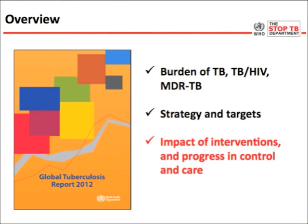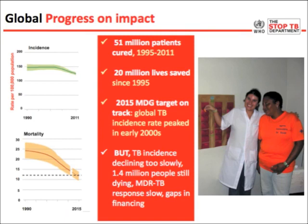Regarding the impact of the intervention: 51 million patients have been cured between 1995 and 2011. We estimate 20 million lives were saved since 1995 when WHO introduced the DOTS strategy. The 2015 Millennium Development Goal target is on track. However, being on track doesn't mean it was an ambitious target — the incidence is coming down but too slowly, and 1.4 million people still die of a treatable disease. The MDR-TB response has been slow and gaps in financing persist.